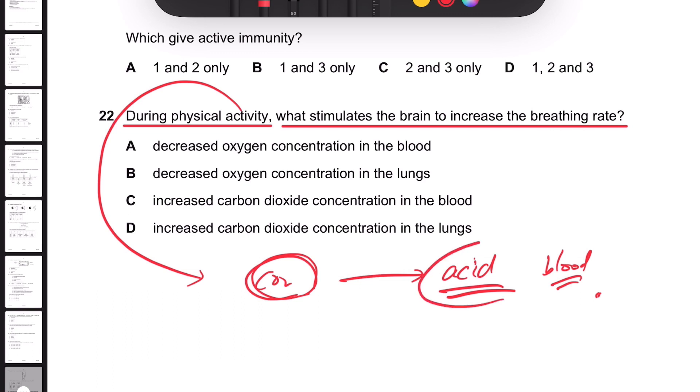And it's going to be this acid that changes the pH and then causes the brain to send the signal to breathe more in order to get rid of the carbon dioxide.